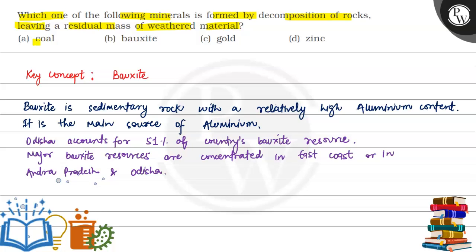We have options: A. Coal, B. Bauxite, C. Gold, and D. Zinc. So the key concept here is bauxite, which is the answer.